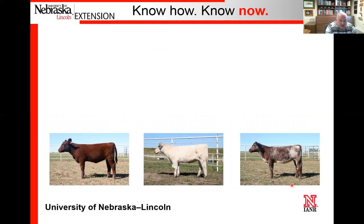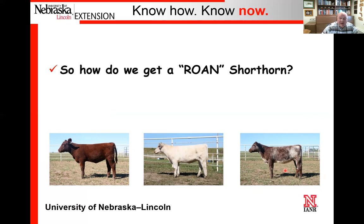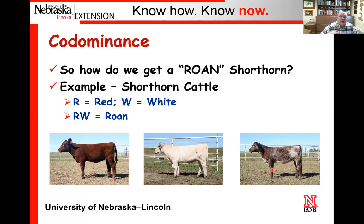Another example relative to hair color—a qualitative trait—would be with shorthorns. With shorthorns, we have a red and a white gene, and we oftentimes get a mixture of red and white, or a roan animal. This happens because the red and white genes are codominant with one another. If both the red and the white gene happen to be present, both will actually be expressed in the animal, resulting in a roan animal.